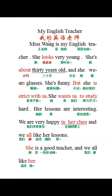My English teacher, 我的英语老师。Miss Wong is my English teacher. 王老师是我的英语老师。She looks very young. Looks 看起来，这是一个感官系动词，后面要加形容词来说明主语的样子。She's about 30 years old. She wears glasses. 这是一个一般现在时的句子。